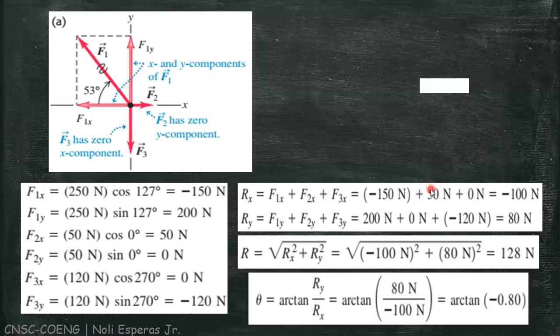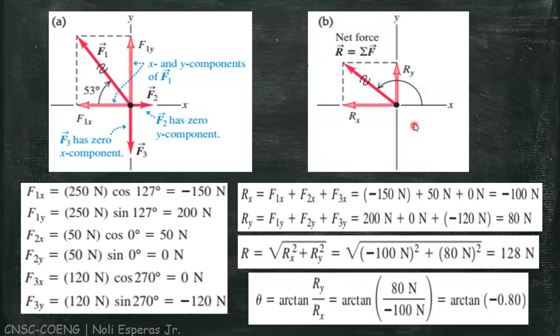Finally, to solve for the direction we're going to get the angle theta. Using the arctangent of y component over x component, we have theta of 141 degrees. So meaning all the forces acting on the champion belt F1, F2, and F3 can be represented by a single force which is the summation of each forces, represented by the resultant vector R.